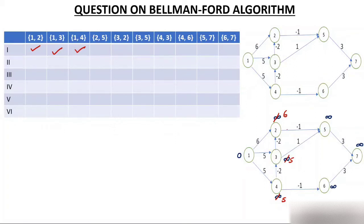Relax edge 2-5: node 2 is 6, edge weight is -1, so 6 plus -1 is 5. Is 5 less than infinity? Yes — node 5 becomes 5. Relax edge 3-2: node 3 is 5, edge weight is -2, so 5 plus -2 is 3. Is 3 less than 6? Yes — node 2 becomes 3.